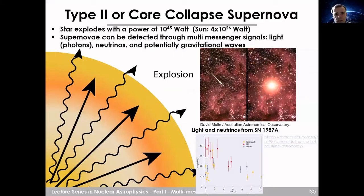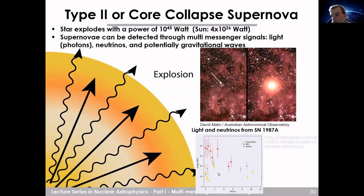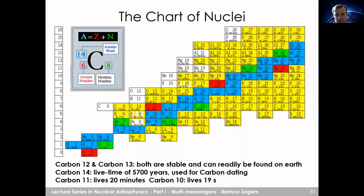The star explodes with 10 to the 45 watts — more than 20 orders of magnitude more power than our Sun. Supernovae can be detected optically; a famous example is SN 1987A. From that explosion, neutrinos were also measured in neutrino detectors — not many, but a few. A plot of neutrino energy versus time provides additional insight into what happens during core collapse supernovae. Like the gravitational wave case, multiple types of signals can be used simultaneously to better understand the event.